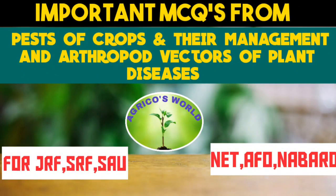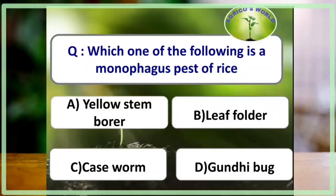Hello everyone, welcome to our channel Agricost World. In this video we are going to discuss some important MCQs related to pests of crops and their management, which are asked in most competitive exams. Which one of the following is a monophagous pest of rice? The answer is rice yellow stem borer, Scirpophaga incertulas.